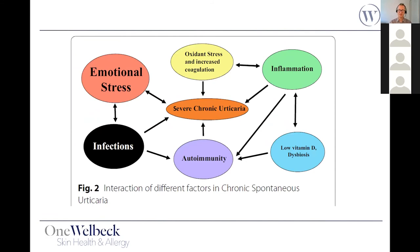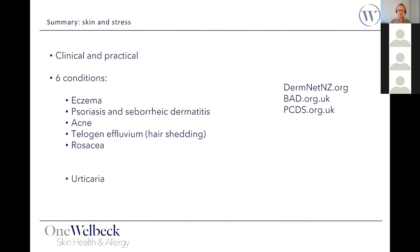Urticaria is not just a skin condition — subtle immune abnormalities, autoimmunity, chronic infection, vitamin D or iron deficiency can all contribute to itching, alongside emotional stress. Management uses antihistamines initially, with consideration of H2 antihistamines and montelukast if required, referring on to an urticaria expert if the patient is not improving. Victoria covered other very common skin conditions relevant to daily practice, and both speakers are happy to answer questions and help with referrals.